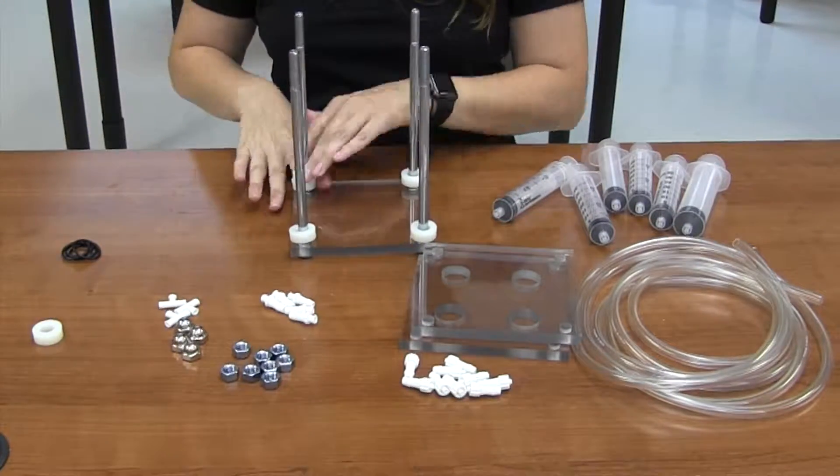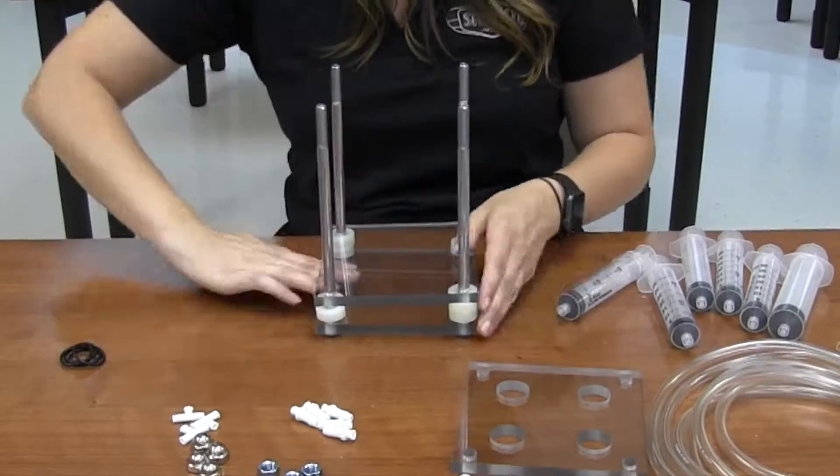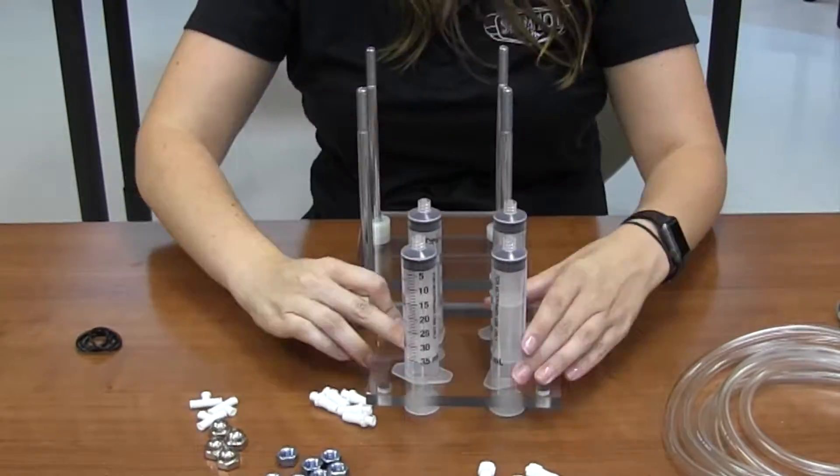The spacers don't affect how the can crusher works, they just prevent this activity from accidentally turning into a hand crusher. You can add them to each corner, or put a few extra in one corner.